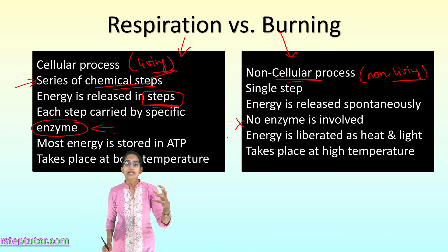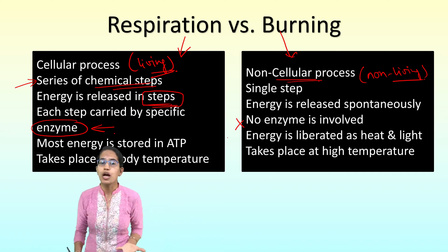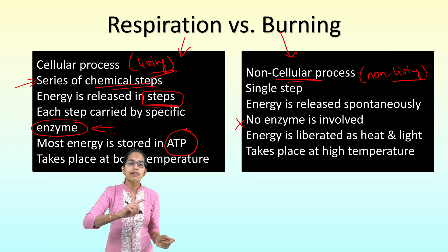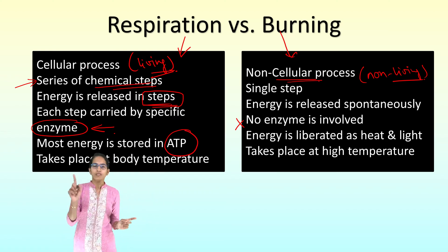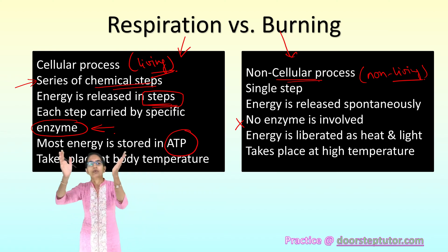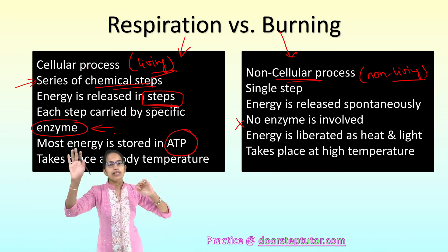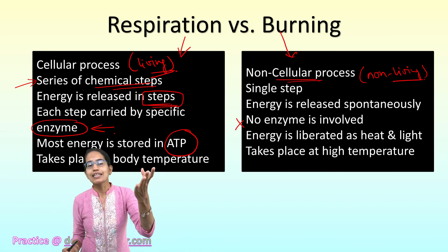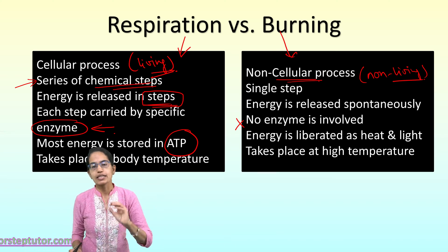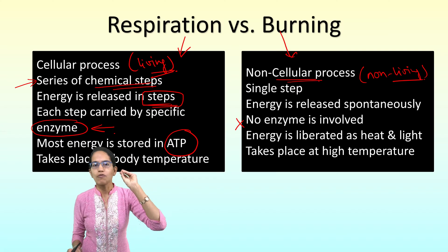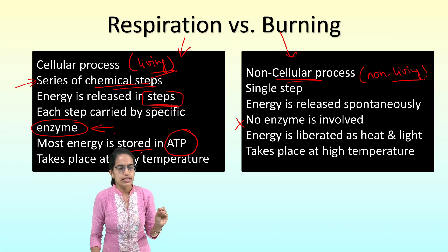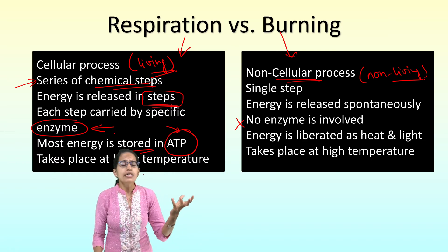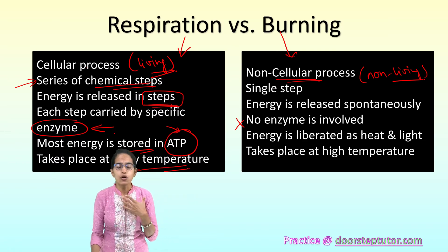The energy released from respiration is stored in ATP. Then we have the ATP-ADP conversion — adenosine triphosphate to adenosine diphosphate. However in the case of burning there is direct release of heat and light, so energy is released in the form of either heat or light, whereas in respiration energy is stored in the form of ATP.